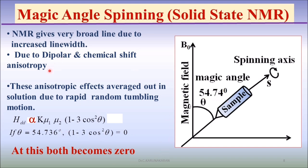Therefore, the lines are narrowed with lower line width. The spectrum is well resolved at this magic angle spinning of the sample.